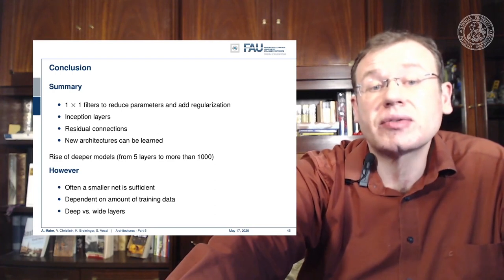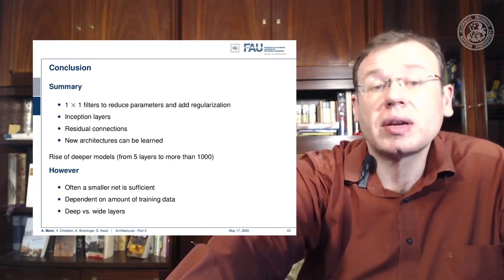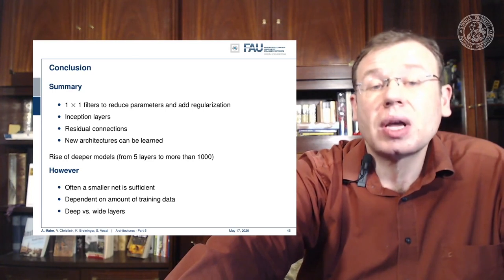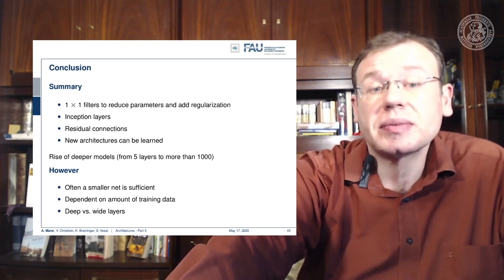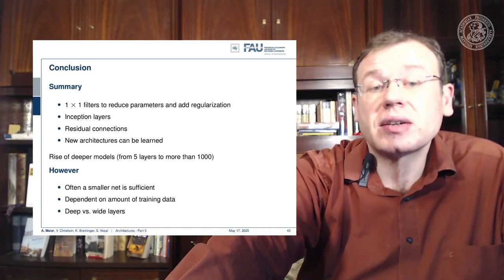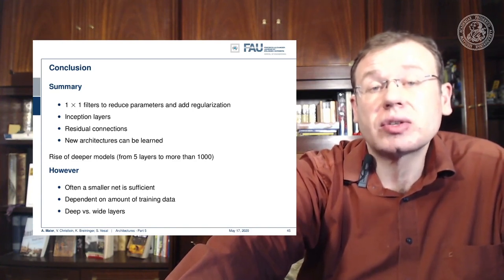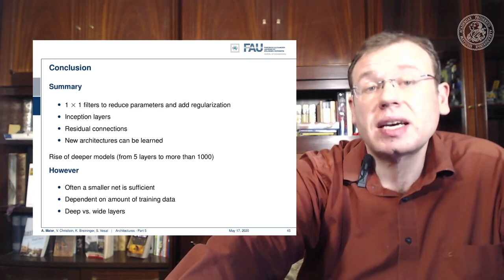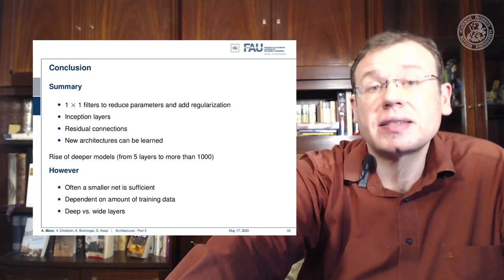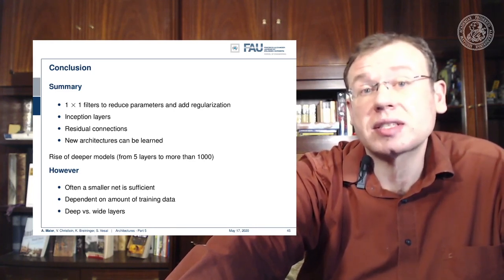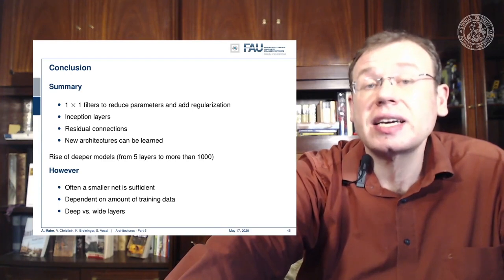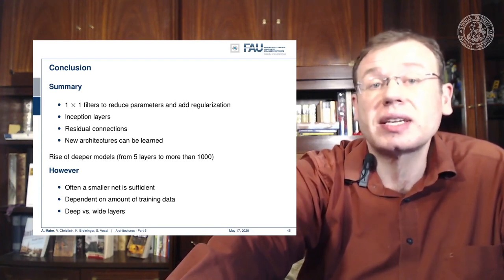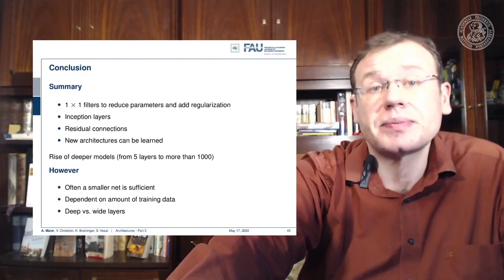We see a rise of deeper models, from five layers to more than a thousand — however, often a smaller net is sufficient, depending on the amount of training data. You can only train really big networks if you have sufficient data. We've also seen that it sometimes makes sense to build wider layers instead of deep layers. You may recall from the universal approximation theorem: if we had infinitely wide layers, maybe we could fit everything into a single layer.